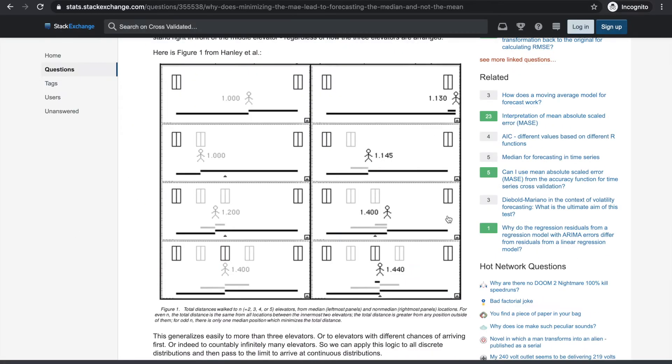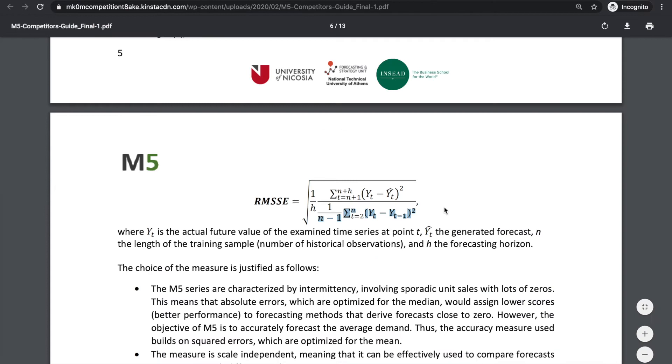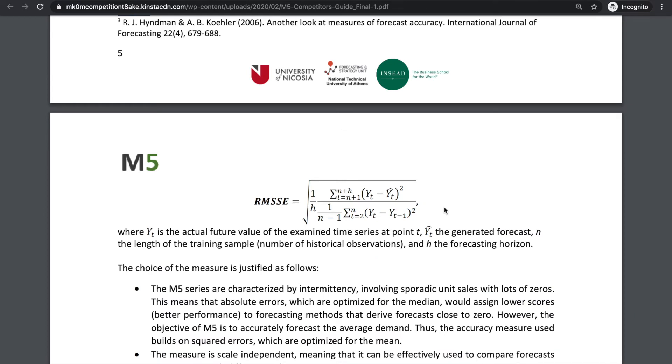I found a very interesting and intuitive explanation of why that is, and I'll link it down in the description below. The denominator is given by the mean squared differences between consecutive days starting from day 2 to the last day of the training set, which in our validation phase is day 1913.